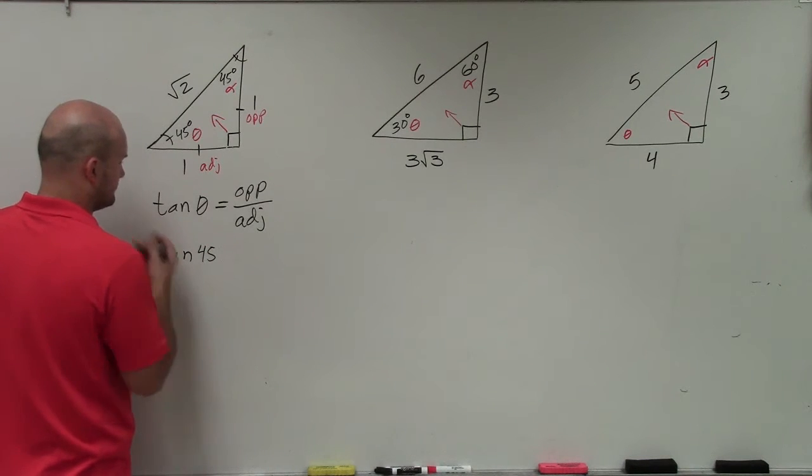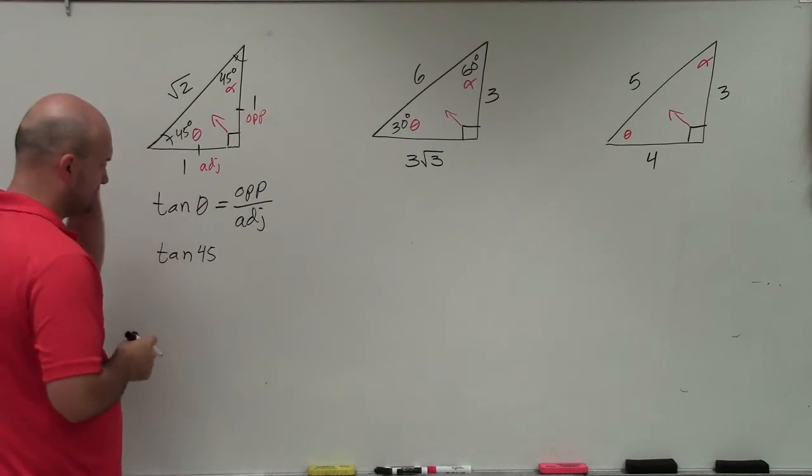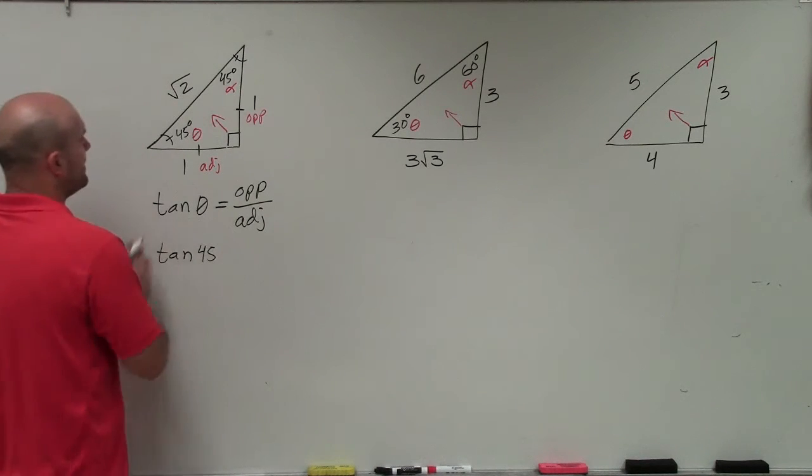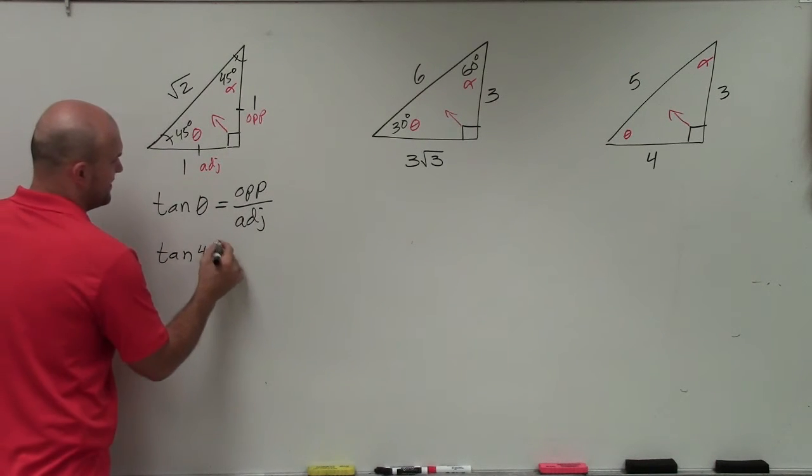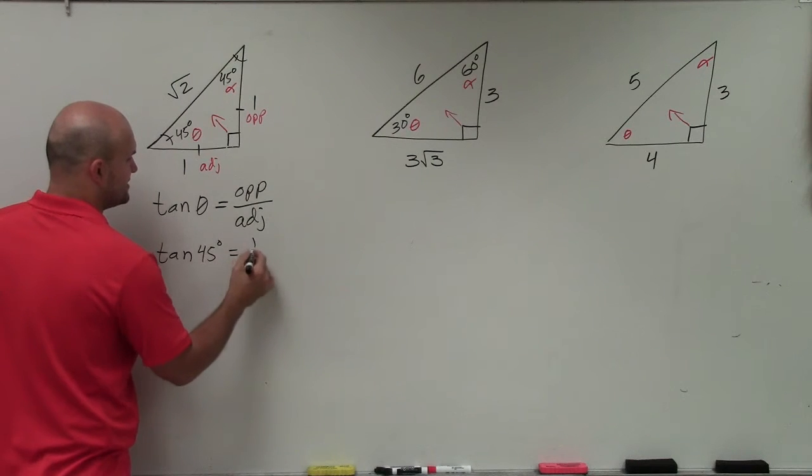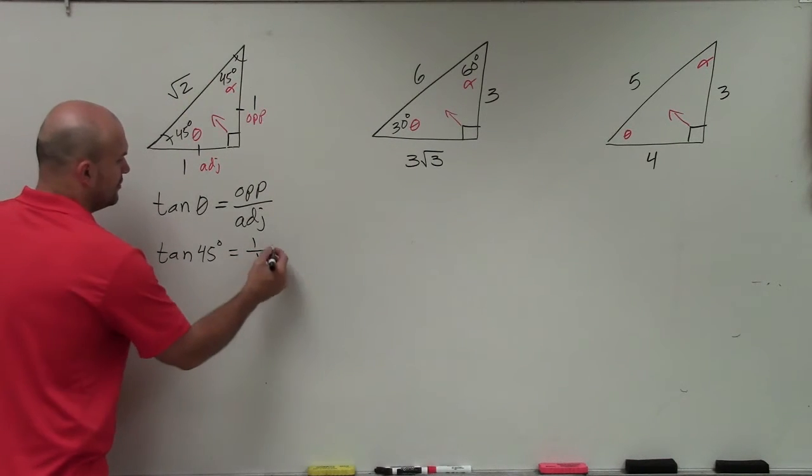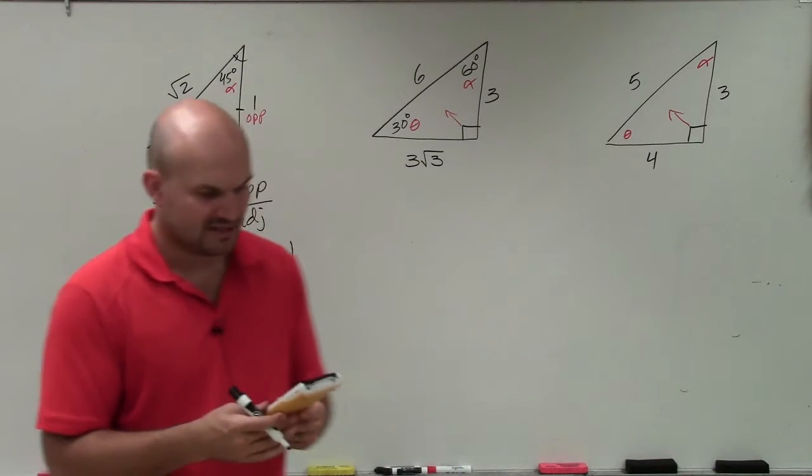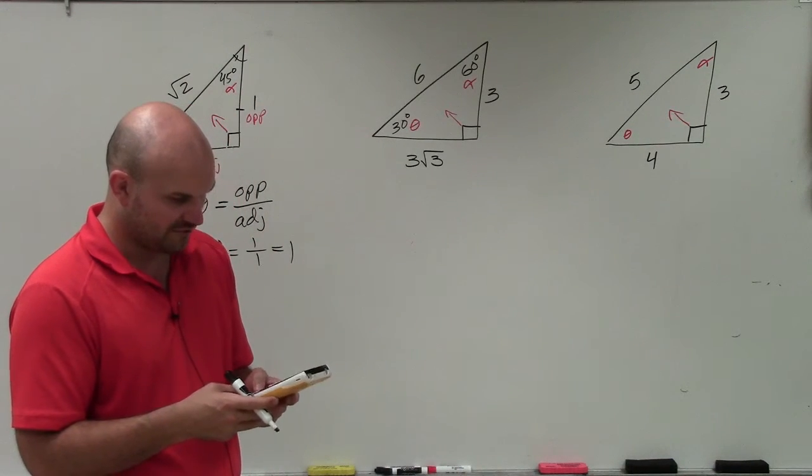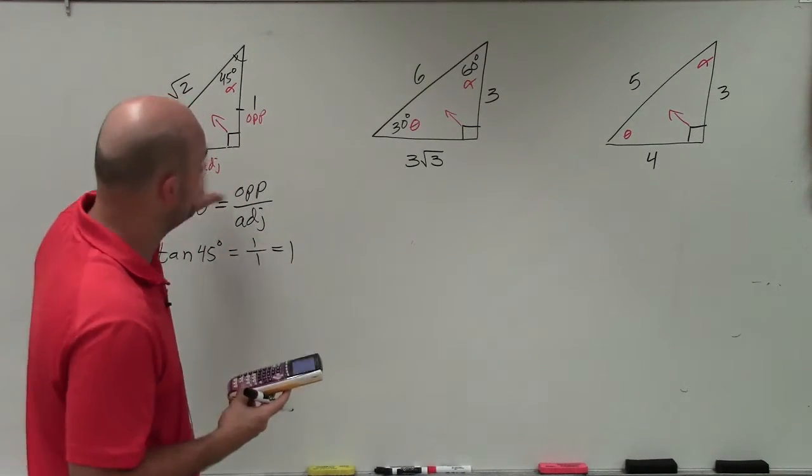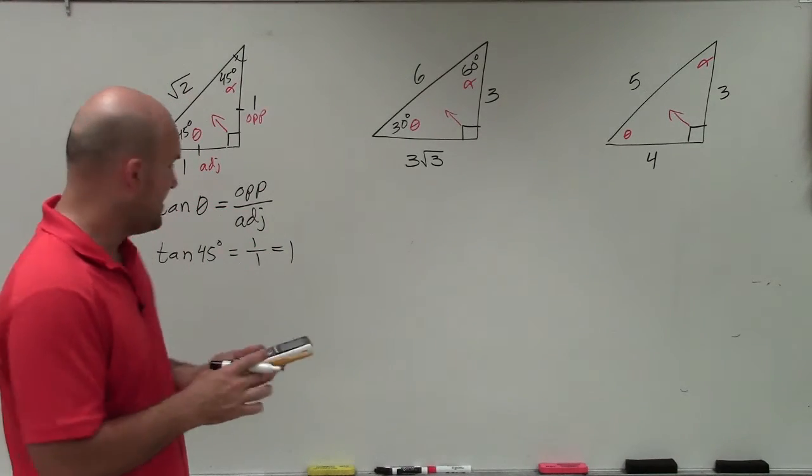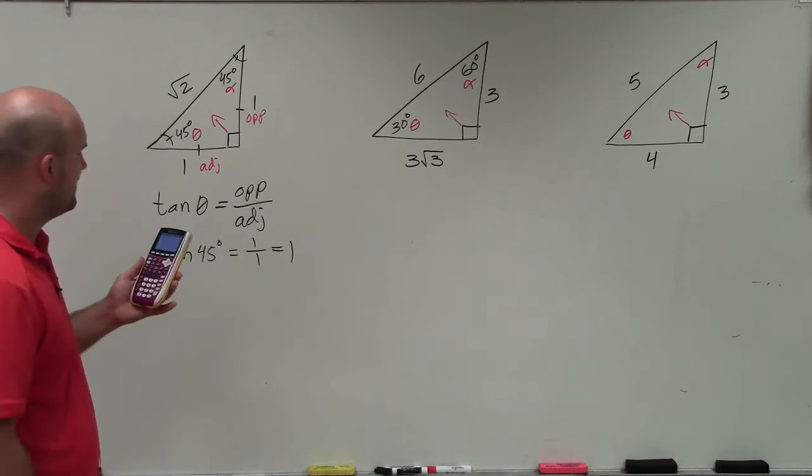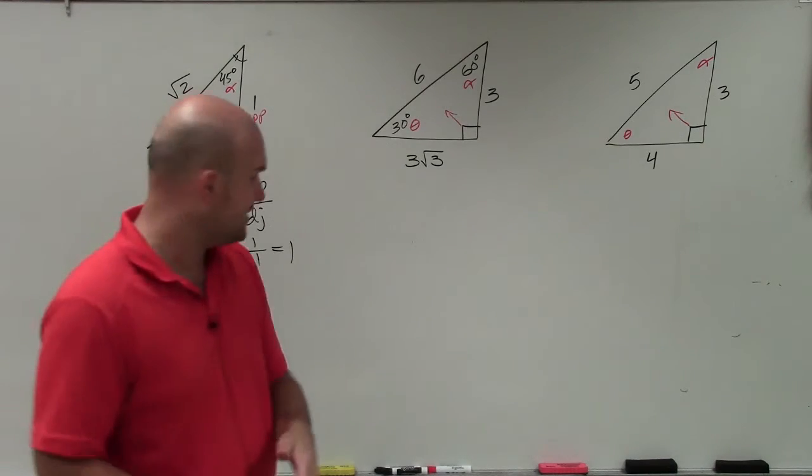The tangent of 45 degrees is equal to 1 over 1, which is just equal to 1. And we can verify that. Because if I plug in the tangent of 45 degrees in my calculator, that is equal to 1. My calculator verifies that.